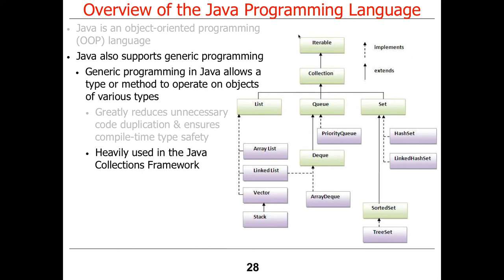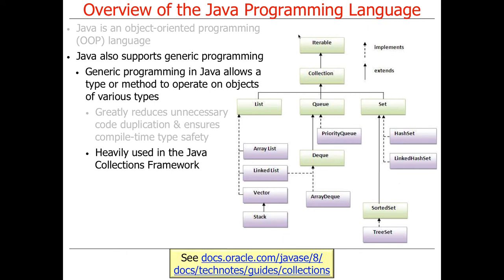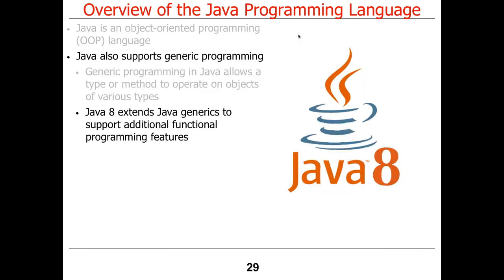Generics are heavily used in the Java Collections Framework. The basic abstractions are lists, queues, sets of various flavors, and then these get customized in all kinds of different ways. There are maps and other stuff that's really cool. We'll use these as running examples throughout the course.